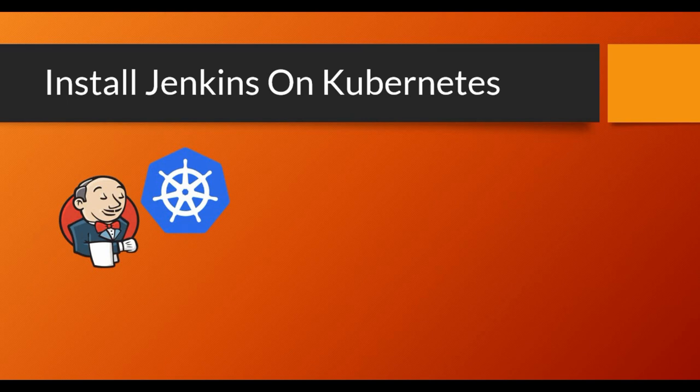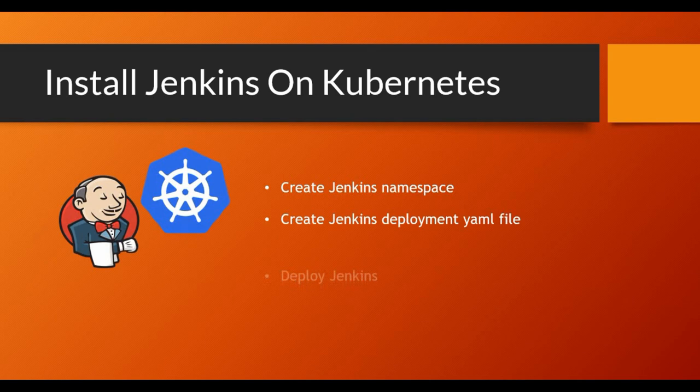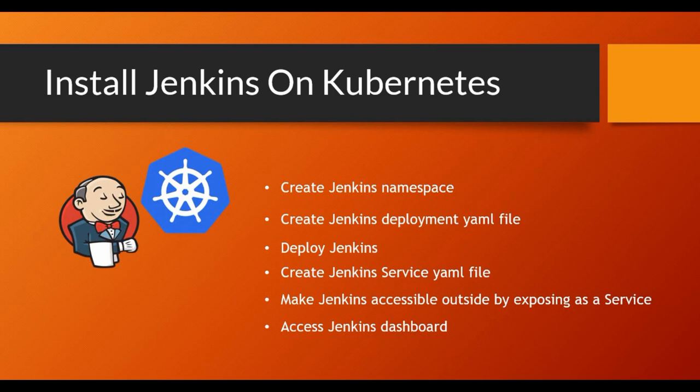In this tutorial on installing Jenkins on Kubernetes, we saw the step-by-step process: creating the namespace, creating the deployment YAML file, deploying Jenkins using kubectl, creating the service YAML file, exposing it as a service, accessing the Jenkins dashboard, and setting up the admin account.